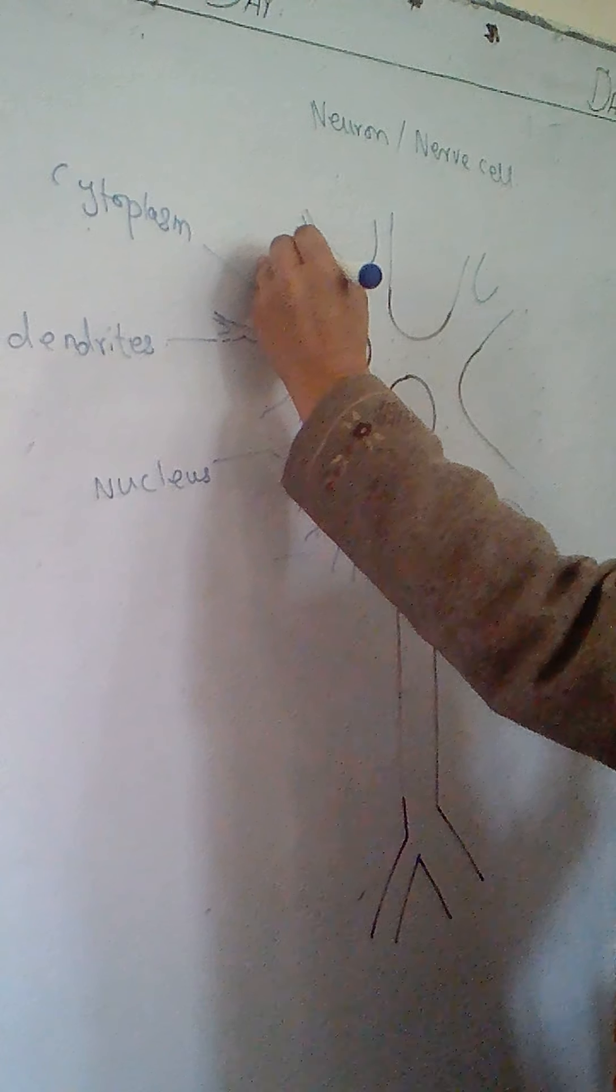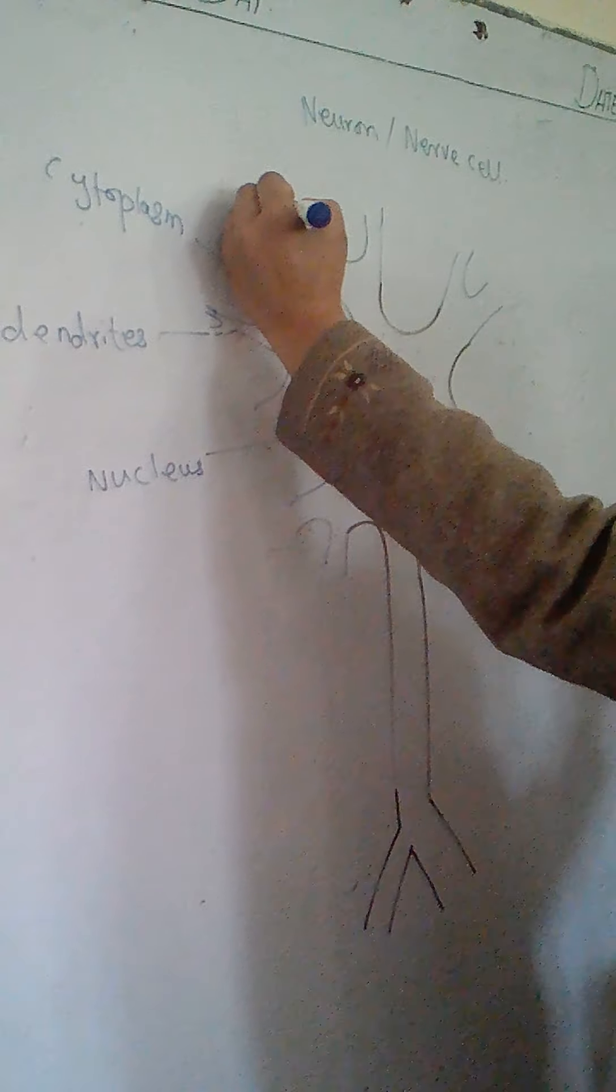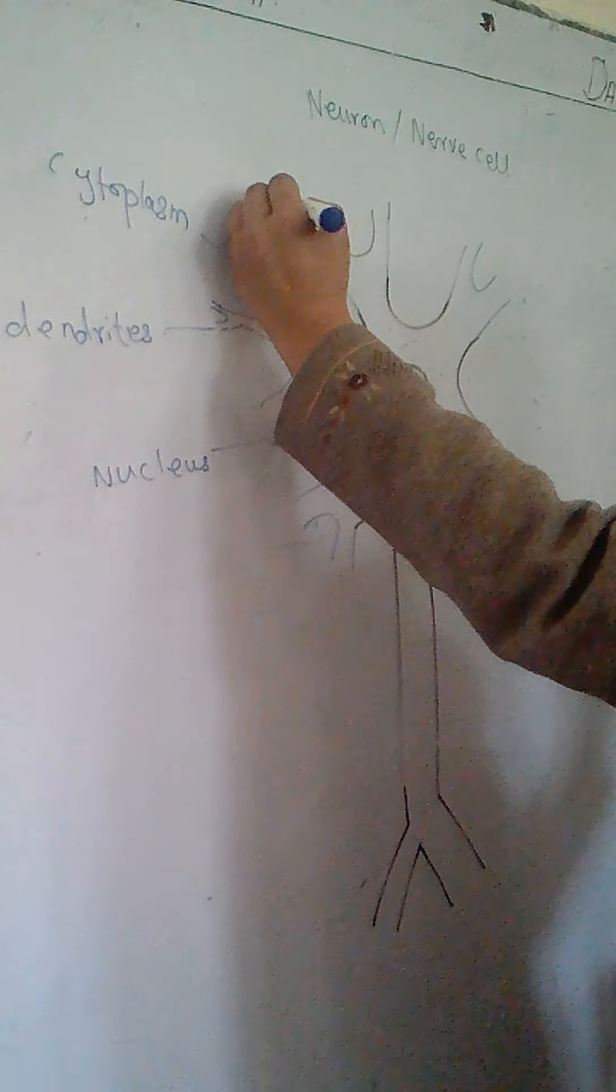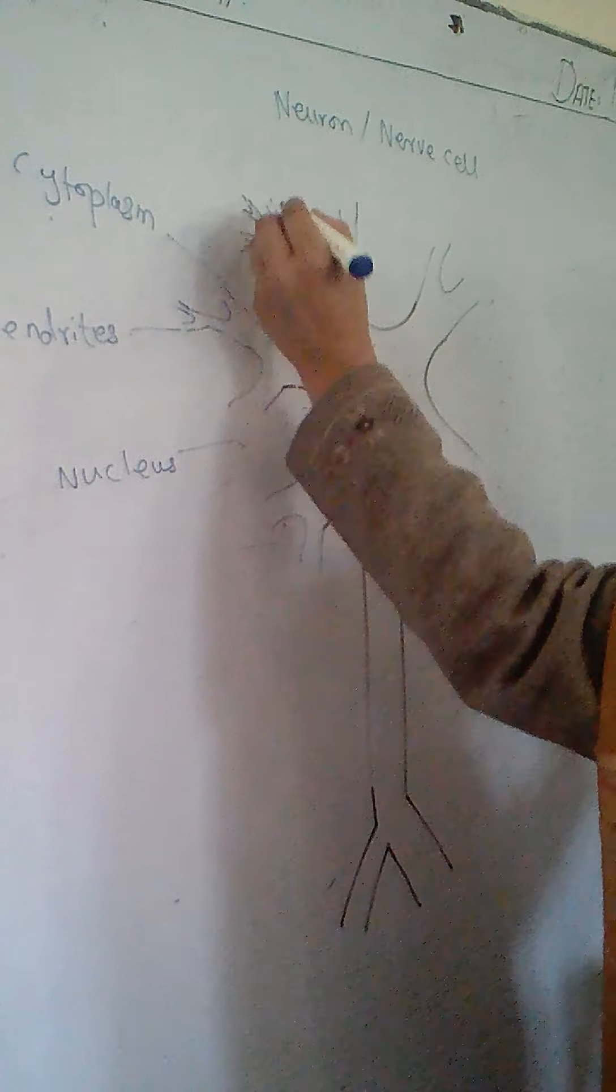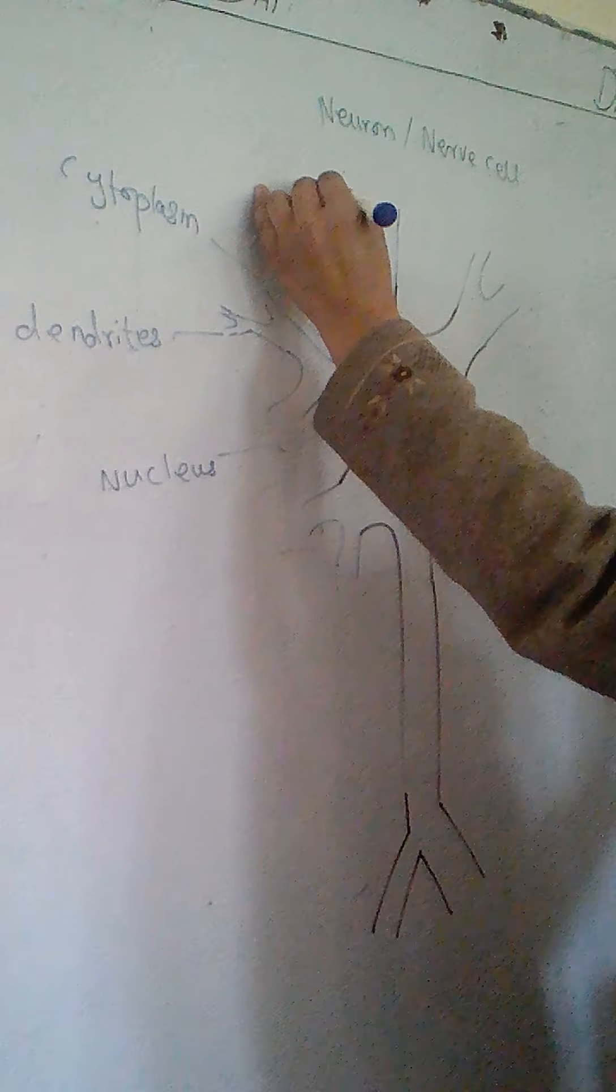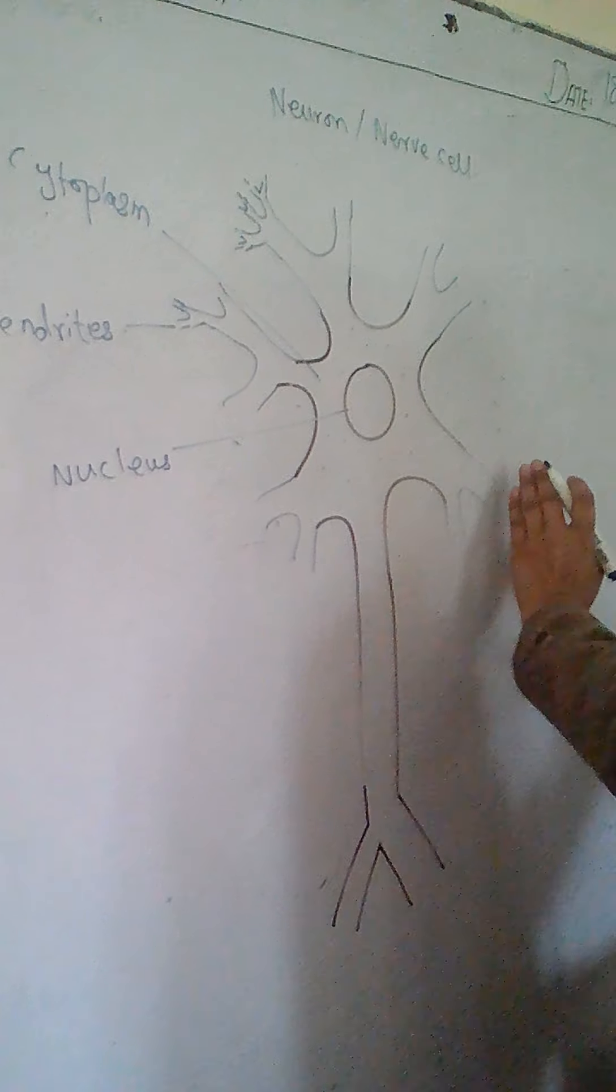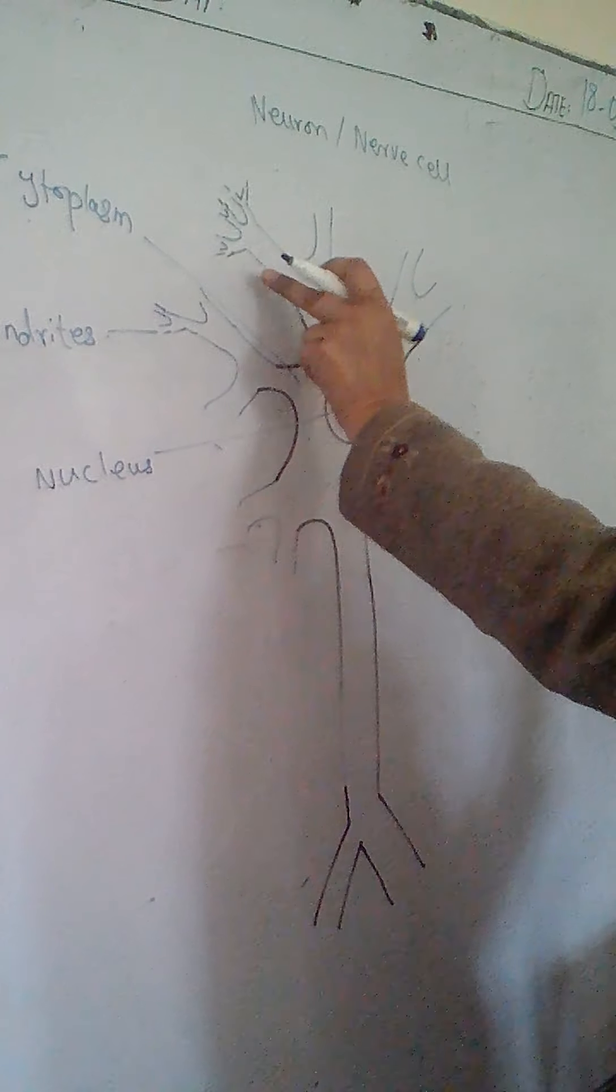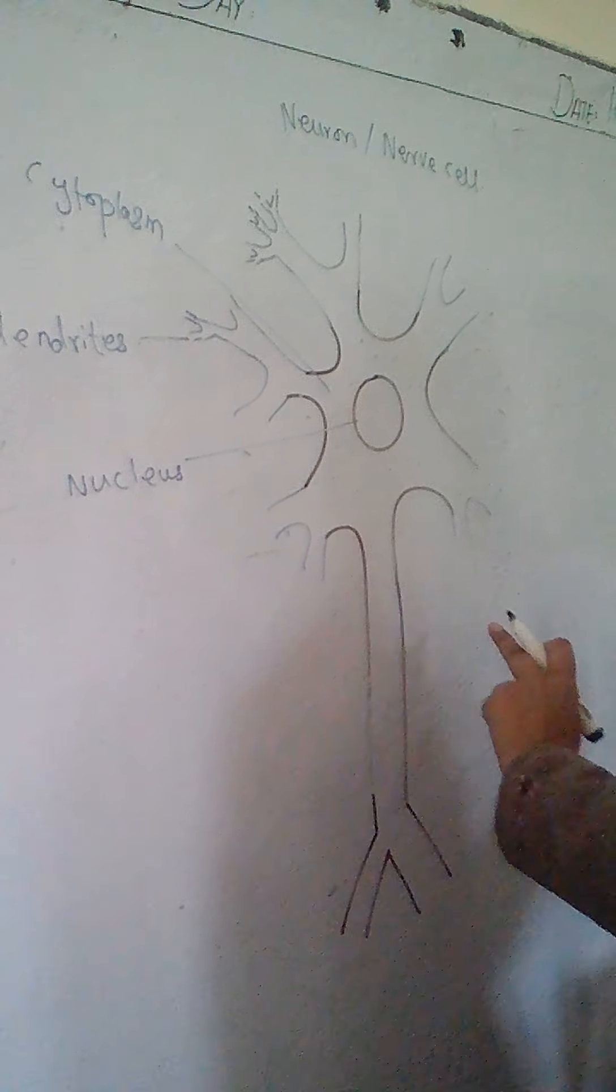So you will have to draw these, and gradually the dendrites will become thinner and thinner. Finally they will become thread-like at the end. You will have to fill the whole side in a similar way, like these dendrites are present all over the body.